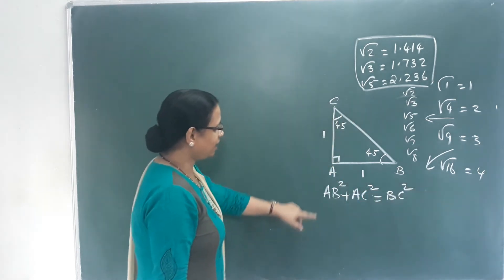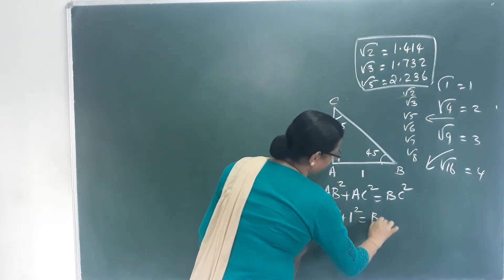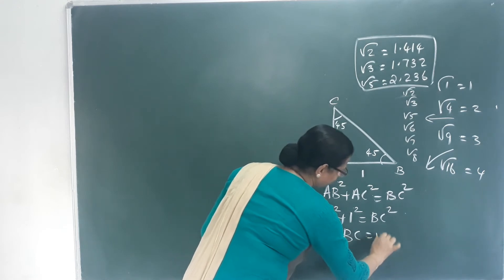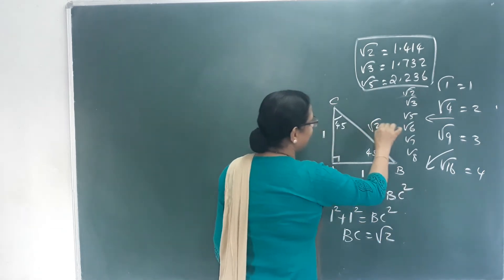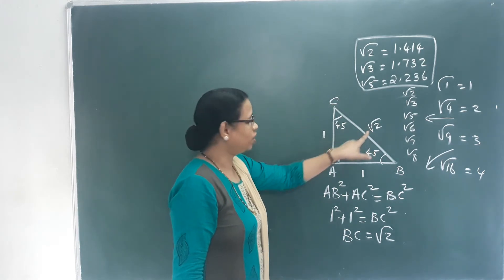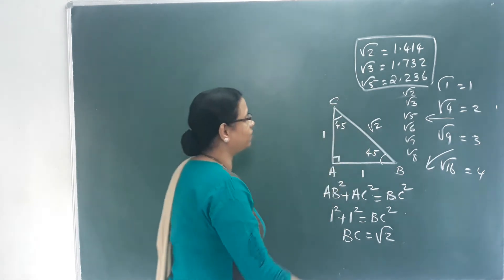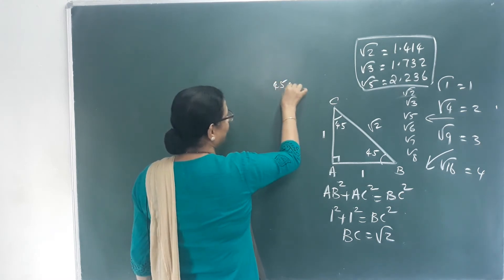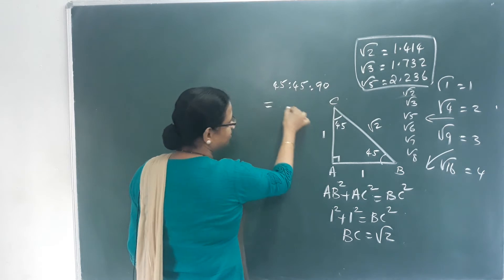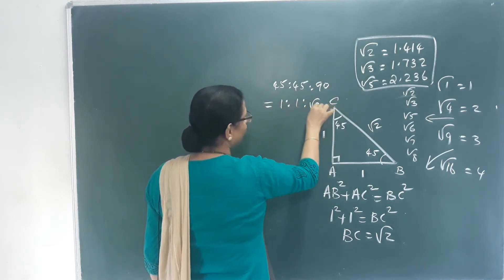Okay. So 1 square plus 1 square is equal to BC square. BC is equal to root 2. So this side length means root 2. So this is a triangle ratio. The 45-45-90 triangle ratio is 1 : 1 : root 2.